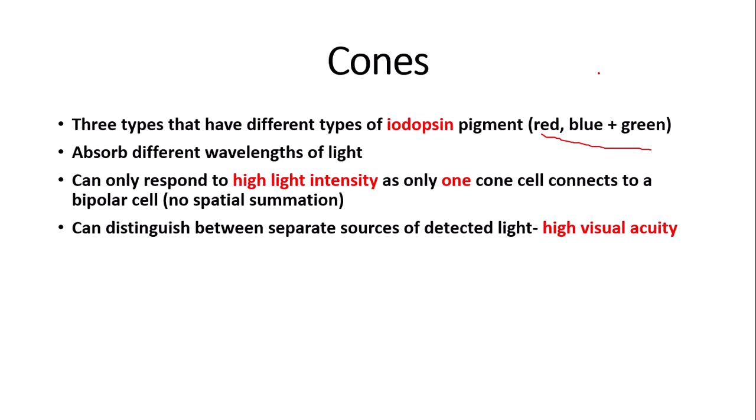However, cones can only respond to high light intensity, as only one cone cell connects to a bipolar cell, so there is no spatial summation as there is in rods. Just one cone connects to one sensory neuron. This also means that the action potential threshold is very high. This means that cones can distinguish between separate sources of detected light — if you had an image of two circles, you would be able to detect them as two separate circles. So we say that cones have a high visual acuity, unlike the low visual acuity of rods.